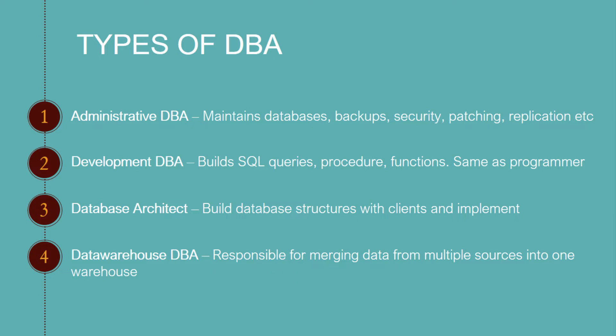Nowadays, organizations have differentiated database administration roles. There are basically four types. The first one is the Administrative DBA. This person maintains the servers and databases and keeps them running — concerned with backups, security, patches, replication, and other such tasks.